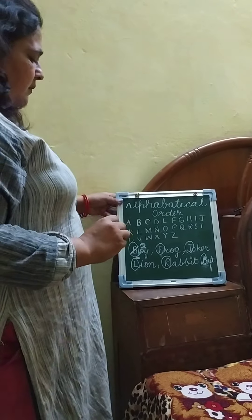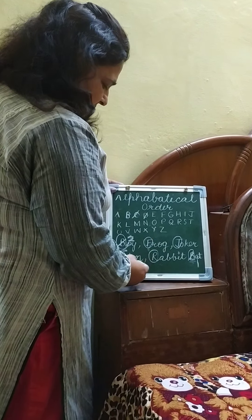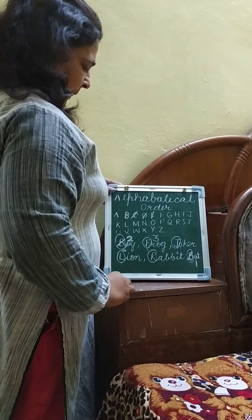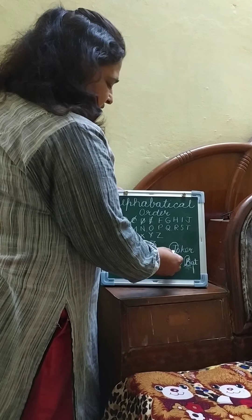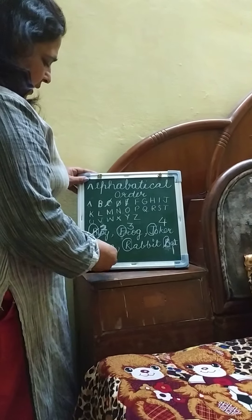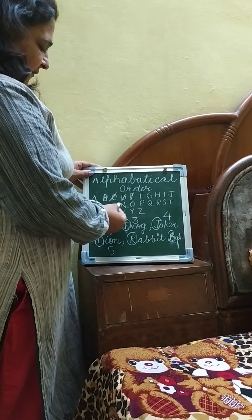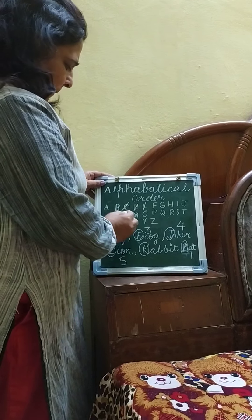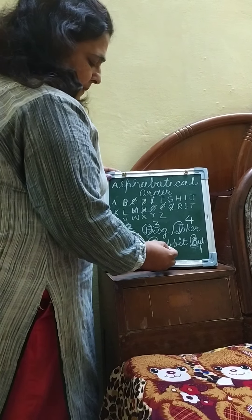Now, after B — C is here? No. D? No. E? No. F? Yes! So F will come in number 3 for 'frog.' Then G? No. H? No. I? No. J? Yes — J comes at number 4 for 'joker.' Then K? No. L? Yes — L comes at number 5 for 'lion.' Then M, N, O, P, Q — none here. R? Yes — R comes at number 6 for 'rabbit.'